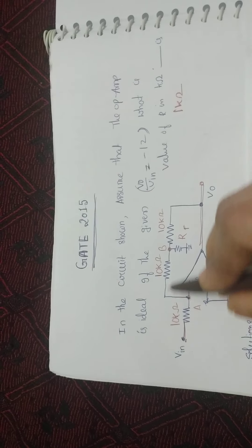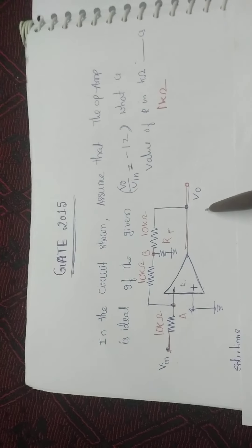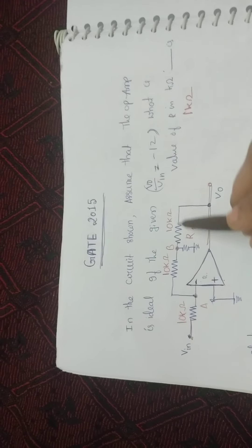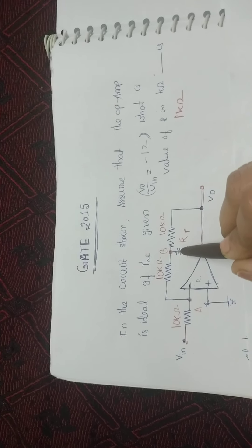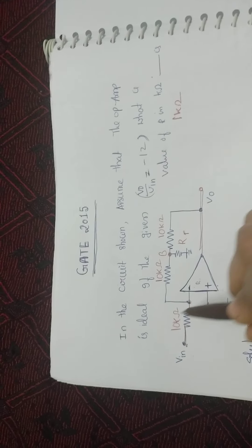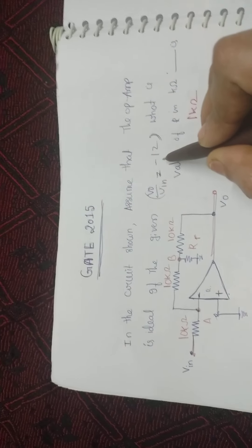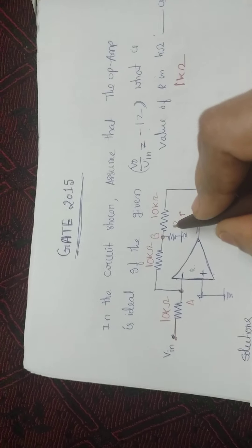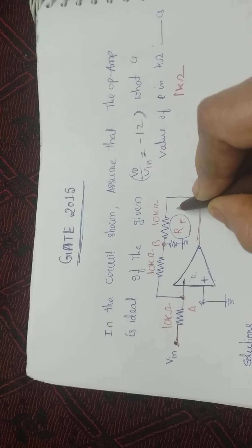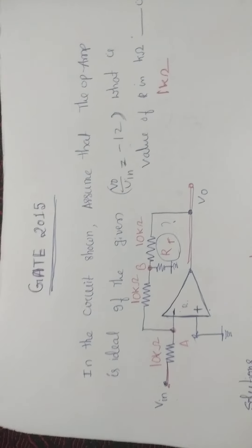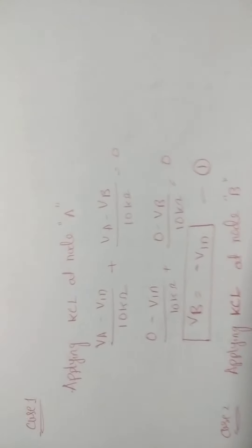This is the resistive network connecting to the feedback terminal of the operational amplifier. It has 10 kΩ, 10 kΩ, 10 kΩ, and RT — a star network connecting in the feedback loop. The voltage gain of the operational amplifier is given as minus 12. From this circuit, we have to find out this resistance. Based on the operational amplifier characteristics, apply KCL at node A and node B.